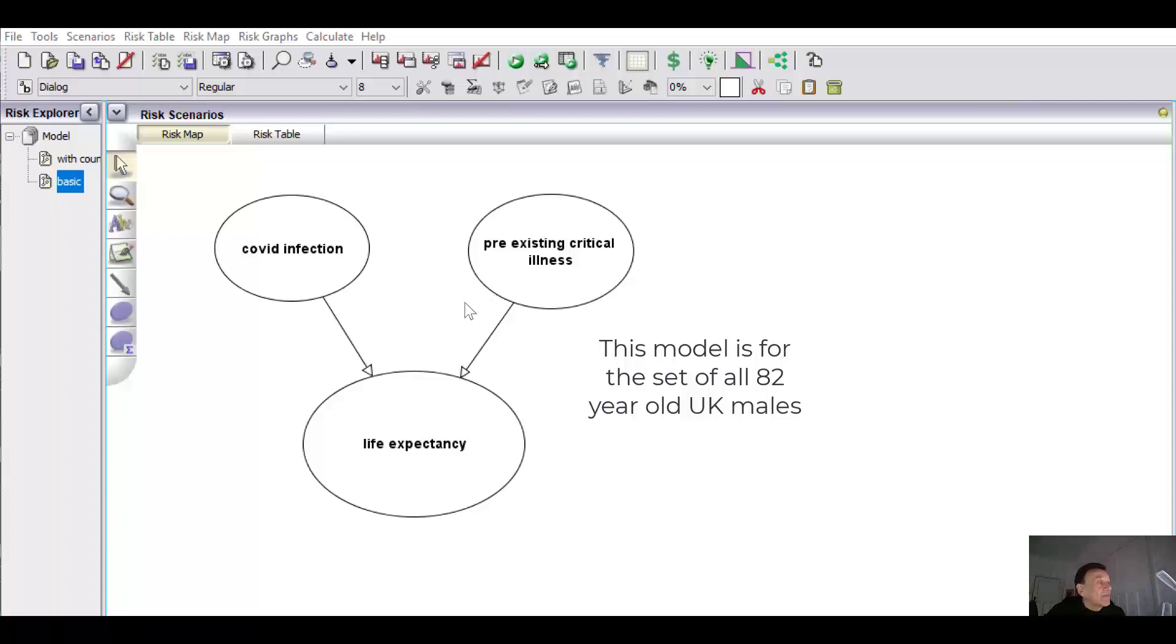Now, when we assign prior probabilities to these nodes and conditional probabilities to this node, then the causal model becomes a Bayesian network for which we perform Bayesian inference.